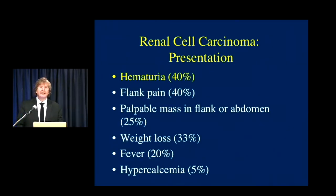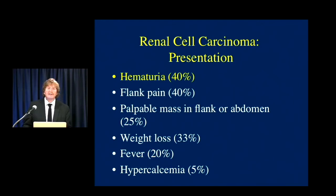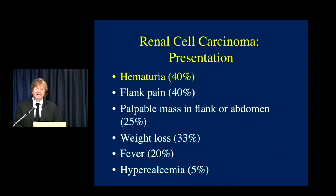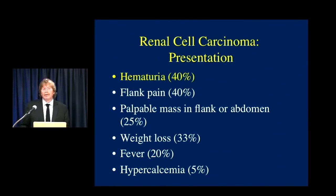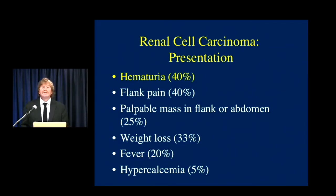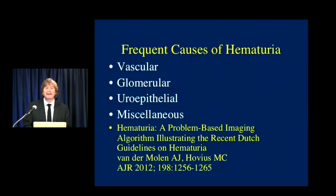Regarding clinical presentation, we always think about hematuria, but only about 40% of patients present with hematuria. Another 40% present with flank pain, palpable mass, weight loss, fever, or hypercalcemia. Palpable mass and weight loss tend to mean the patient has metastatic disease. The good news is that the majority of patients today with renal cell carcinoma are picked up by serendipity — we pick up an incidental mass while scanning for abdominal pain, trauma, appendicitis, or many other reasons. The earlier you pick up a renal cell, the more likely it is to be resectable.